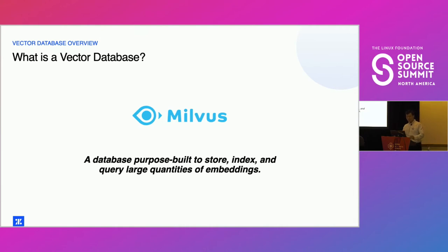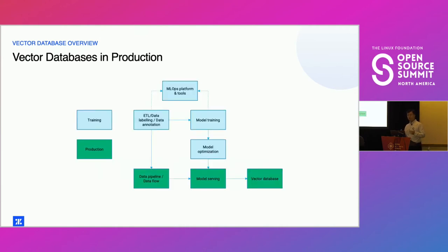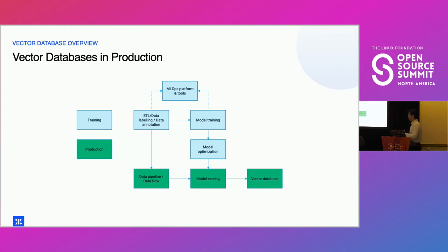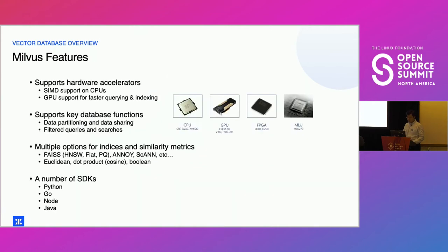Vector databases are forming an increasingly core part of production machine learning and AI systems. In production, you have data flow, data pipelining, and model serving, and a lot of the results of these models — either as metadata or more powerfully as the embeddings themselves — go into a vector database.